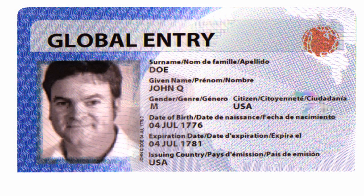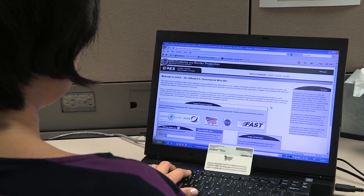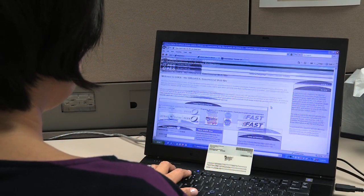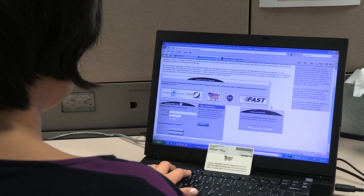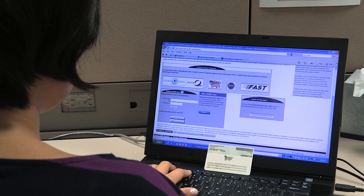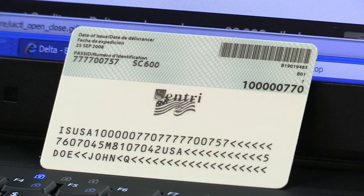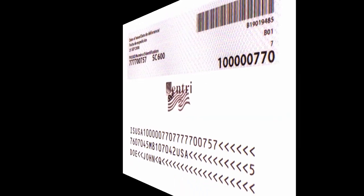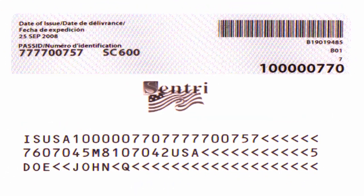Participants should also remember to enter their full name exactly as it appears in their GOES account. CBP Trusted Traveler members can find their Pass ID online by accessing their GOES account or on their membership card. The Pass ID is located on the back of the membership card in the top left corner and is nine digits long.